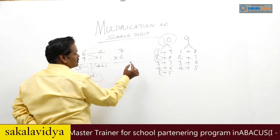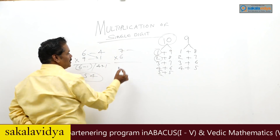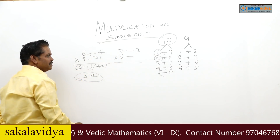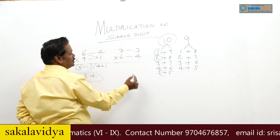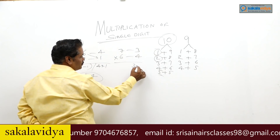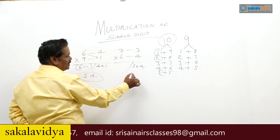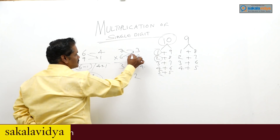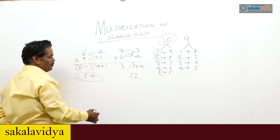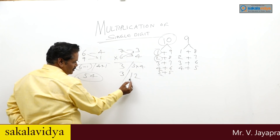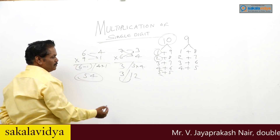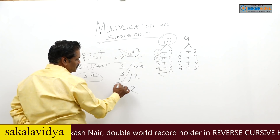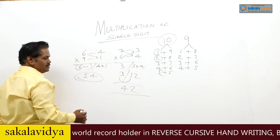7 into 6: complement of 7 is 3, complement of 6 is 4. 3 into 4 is 12 — we are getting a 2-digit number. 7 minus 4 is 3, or 6 minus 3 is 3. We add the carry: 3 plus 1 gives 4. So 7 into 6 is 42.